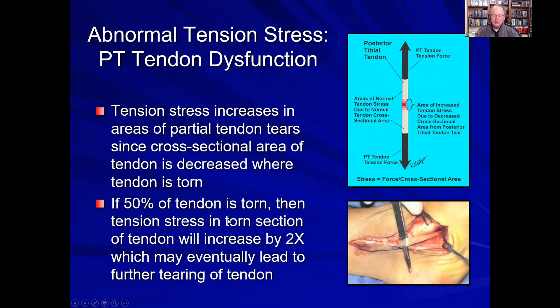In fact, if 50% of a tendon is torn, this will increase the tension within that area of torn tendon — which is only half its normal thickness — to double what it would have been in the normal areas of tendon thickness.